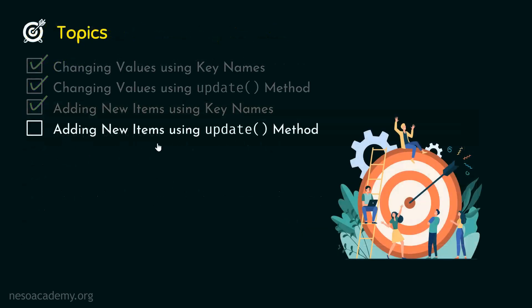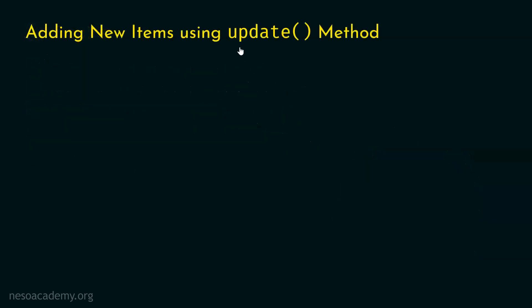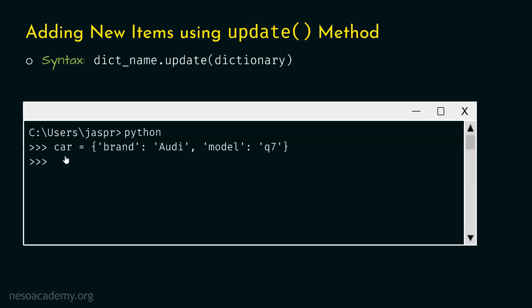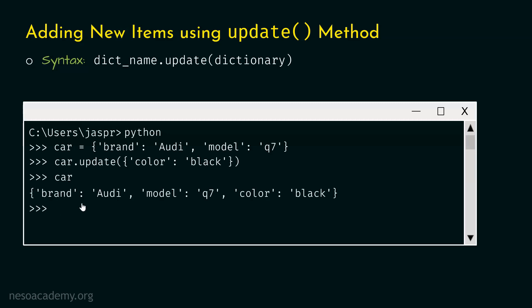Now let's move on to the next topic: adding new items using the update method. We can add new items using update method. The syntax is: type the name of the dictionary, then dot, then update, and within parentheses provide a dictionary with the new key-value pairs. Let's consider the same car dictionary and add color:black by typing: car.update({'color': 'black'}). Let's hit enter and type car. We get the new dictionary with color:black as the new key-value pair.